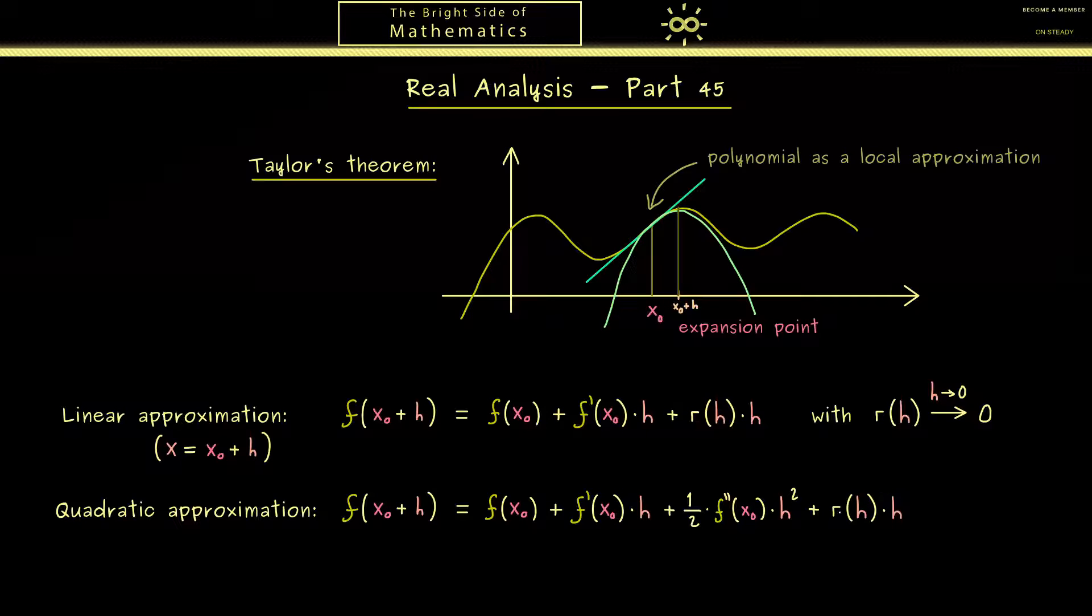And in a similar way as before we have a remainder term which is not the same but we still call it r. But now we have it here with h squared. Moreover please don't forget that speaking of an approximation this still means that this function r goes to 0 when h goes to 0.